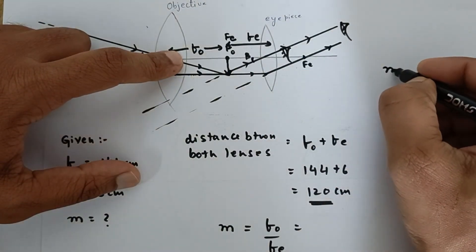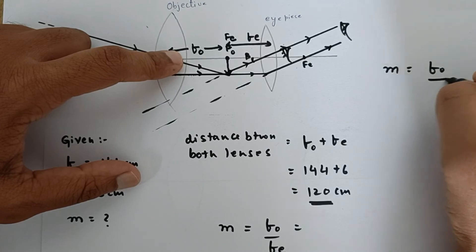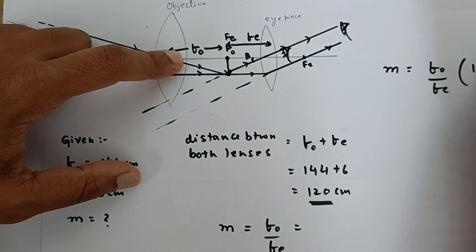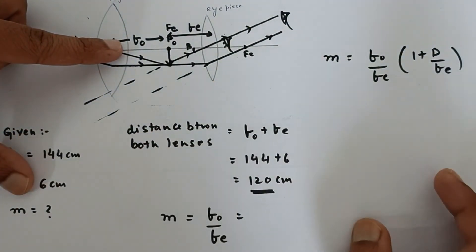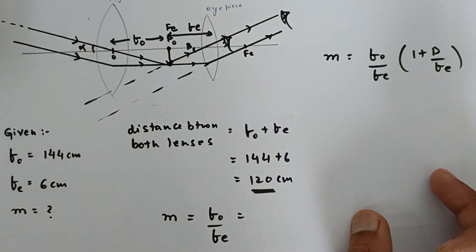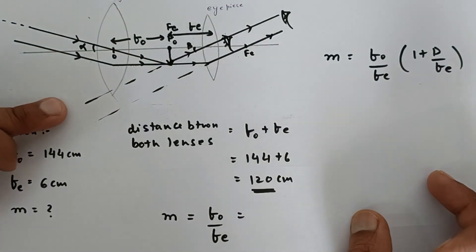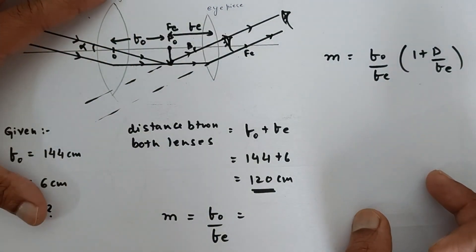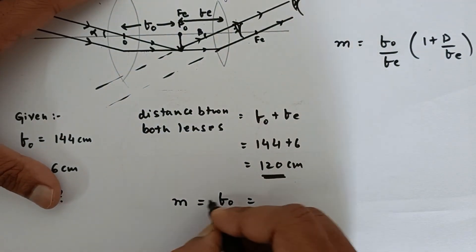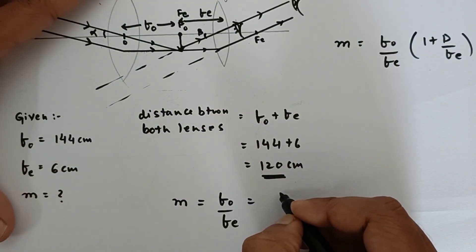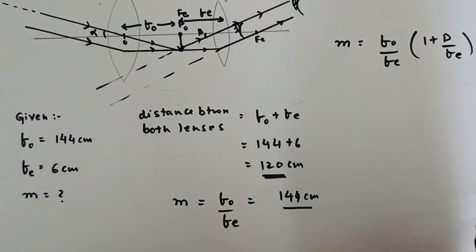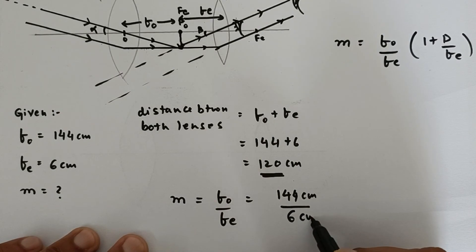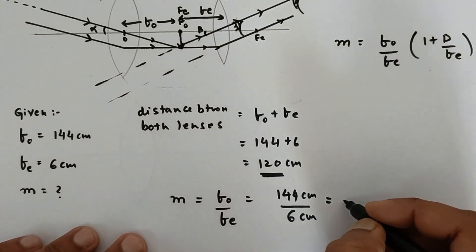In that case, the magnification is given by fo upon fe times 1 plus D upon fe. But we are not supposed to follow this particular case because we are supposed to consider the object at infinity and the final image also at infinity, as per the textbook. So the objective focal length is 144 centimeters divided by 6 centimeters, so the magnifying power is 24.